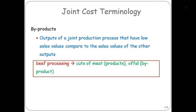Byproducts are outputs similar to scrap — not the primary purpose of the production process, but they are an output. If you think about a cow and the butchering of a cow, you've got the tenderloin, the rib eye, and all the good stuff, and then you have something called offal. It's the kidneys, livers, hearts, and hoofs. It's also a product — it has value, maybe for dog food.